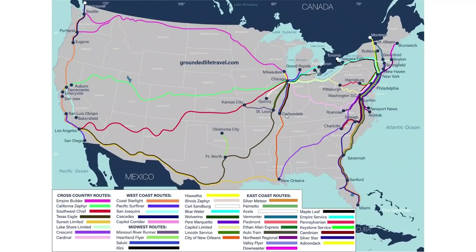Here's an example of how the map helps determine how many trains you'd need. If you're in Missouri just outside St. Louis and want to get to Mississippi — which doesn't look far on a map — you'd actually need to ride the Missouri River Runner to St. Louis, one train up to Chicago, the City of New Orleans all the way down, then the Crescent up to Mississippi. That's at least four trains.